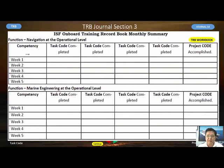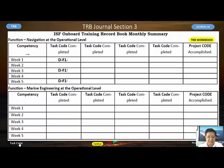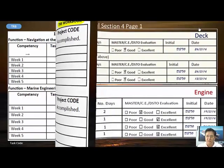Going back to section three, enter the code for each competency in the appropriate week. The date on your training record book will determine which week to assign it to. If two competencies were completed in the same week, write the second one in the next column. Assume one competency per week for this example. Now enter the task codes you have written down — deck codes and engine codes.